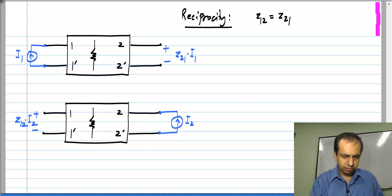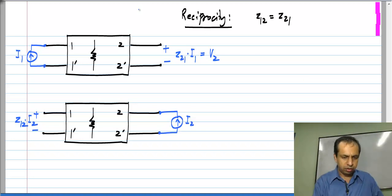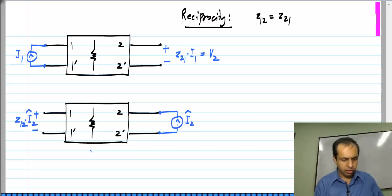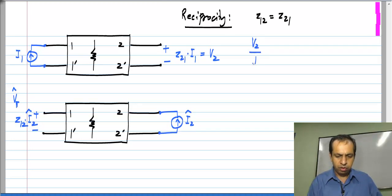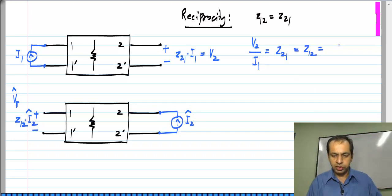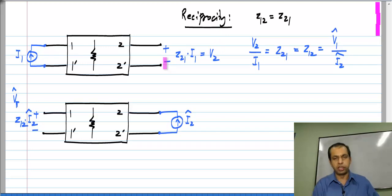What I have to prove: let me call this V2, and just to distinguish between the two cases, let me call the current in the second case I2-hat. Then the voltage here would be Z12 times I2-hat, and I will denote that voltage by V1-hat. The hat refers to the second case; without the hat it is the first case. So essentially V2 by I1 would be Z21, and I have to prove that it equals Z12, which is V1-hat by I2-hat — these are the open-circuit transmission parameters from one side to the other.